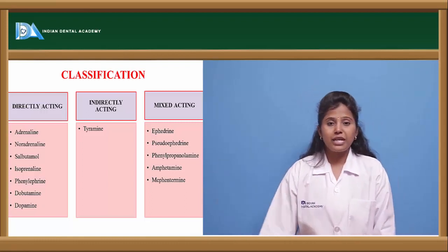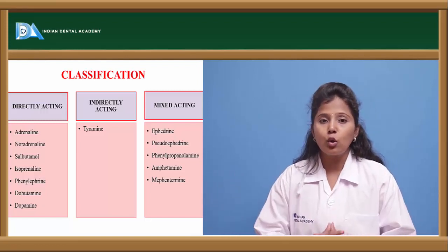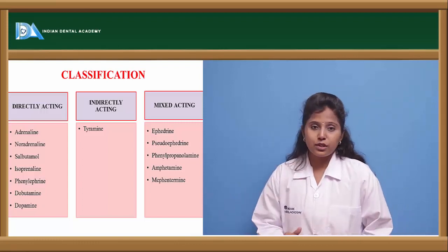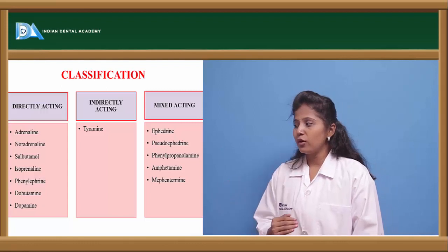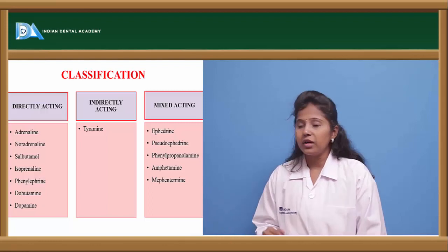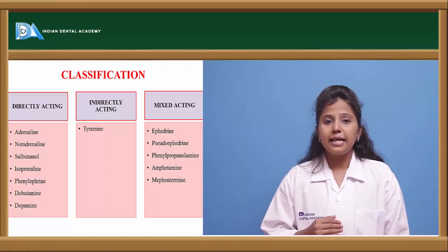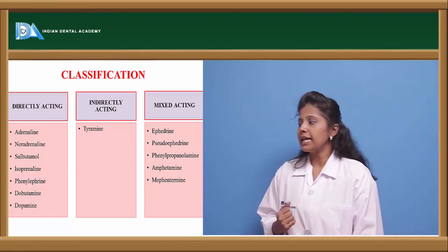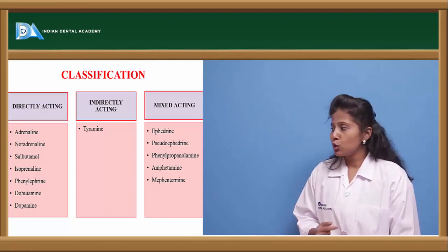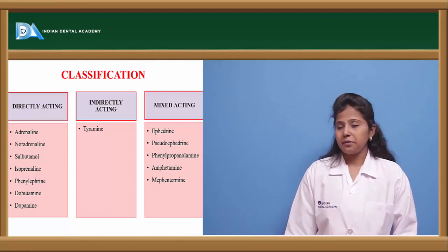Directly acting drugs include adrenaline (epinephrine), noradrenaline (norepinephrine), salbutamol, isoprenaline, phenylephrine, dobutamine, and dopamine. The indirectly acting drug is tyramine. Mixed acting drugs include ephedrine, pseudoephedrine, phenylpropanolamine, amphetamine, and methamphetamine.